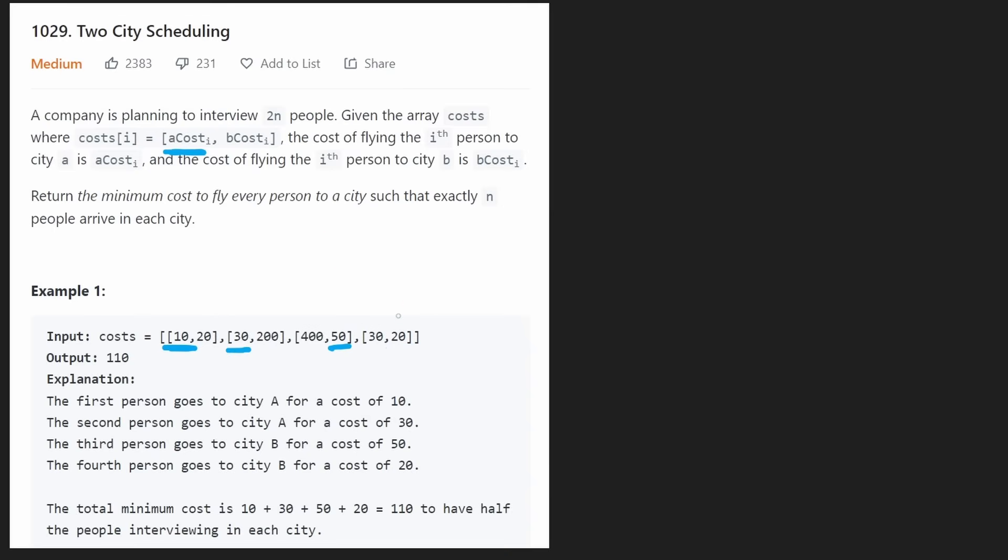It could have been that this is 200 rather than 20, and then we would have chose this as the minimum. In that case, we would have gotten three people going to city A and one person going to city B, which is not what we want. We want to minimize the cost, but we want half of the people to go to city A and half to go to city B.